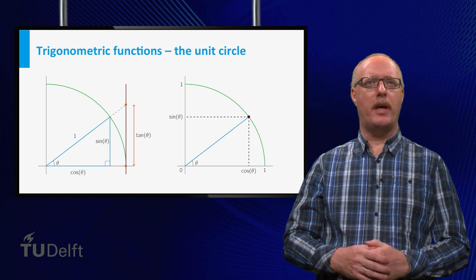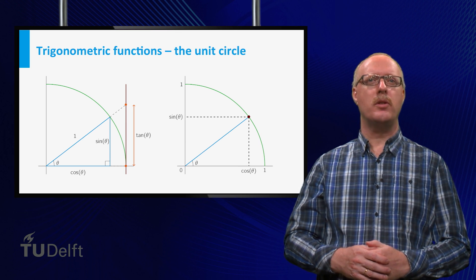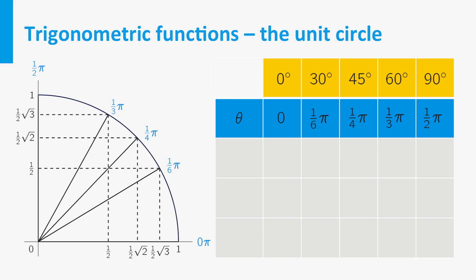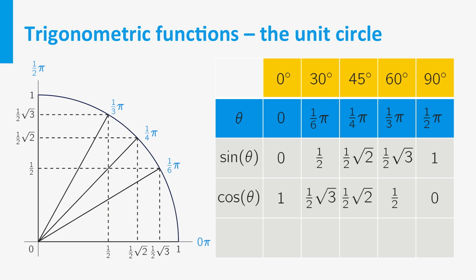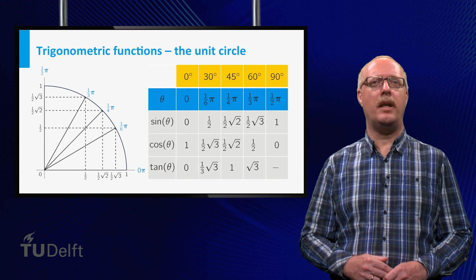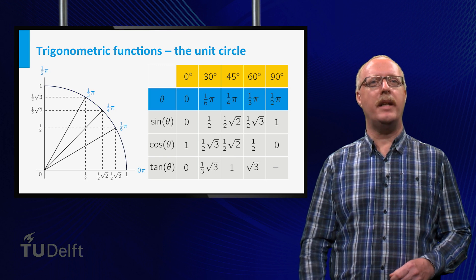In this way we can collect the values of the trigonometric functions for special values of the angle theta between 0 and π/2. We consider the angles 0, π/6, π/4, π/3, and π/2. For the sine, we obtain these values using the vertical axis, and for the cosine, we obtain these values using the horizontal axis. The value of the tangent is obtained by the ratio of the sine and the cosine. Of course, this does not exist for theta equals π/2, since then the cosine is equal to 0.